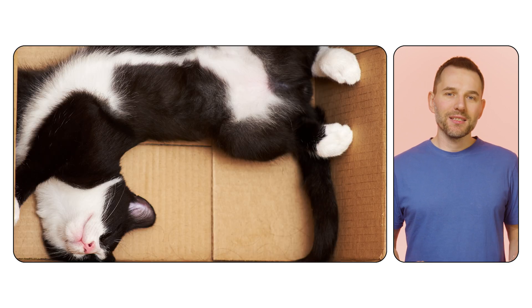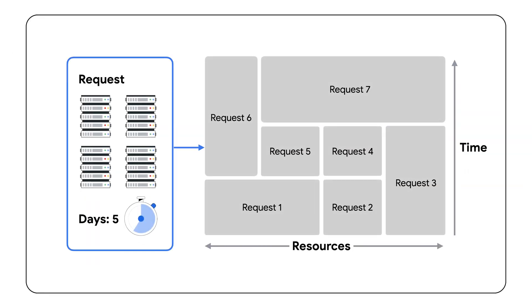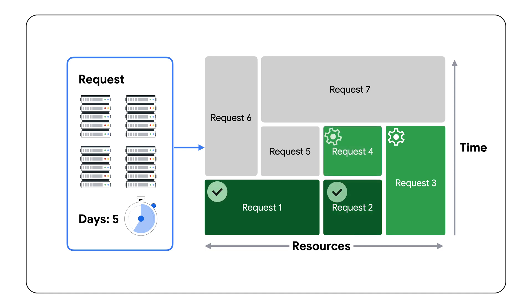Flex mode — flex as in flexible, like a cat. In flex start mode, you send your job specification to the scheduler, describing how many machines you need and for how long. The scheduler then starts to collect the machines as they become available. As soon as it has gathered all the hardware you requested, it provisions your VMs, enabling your workloads to run continuously for the entire duration of the capacity allocation.